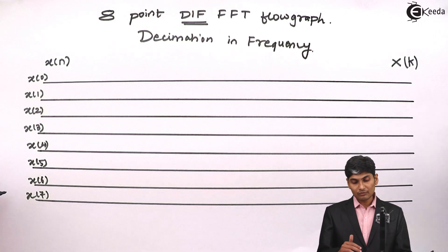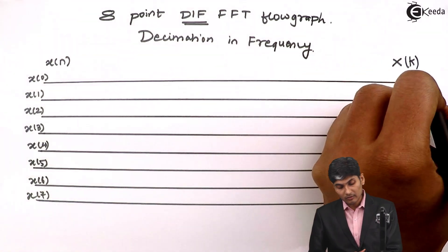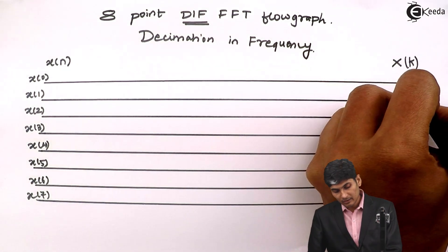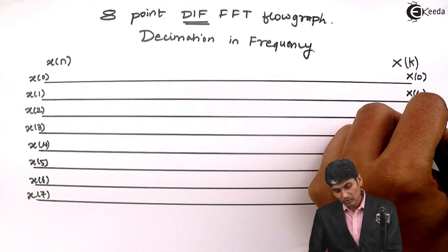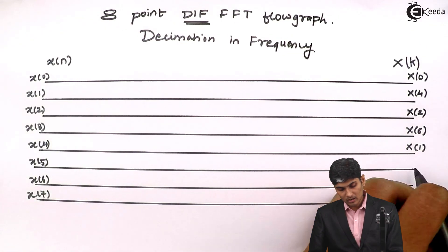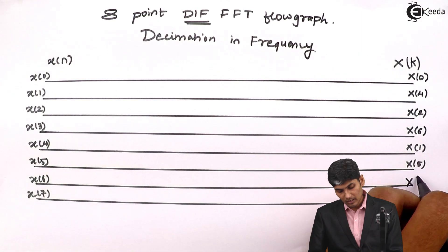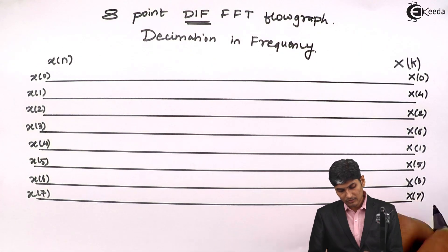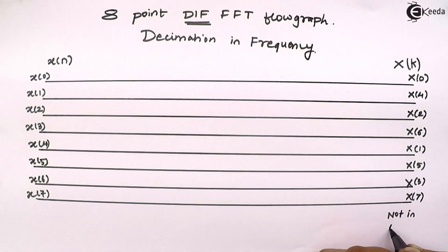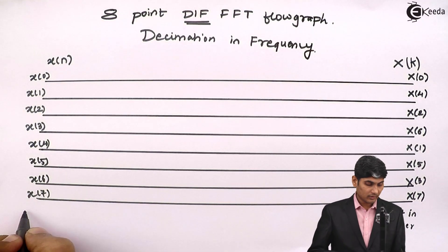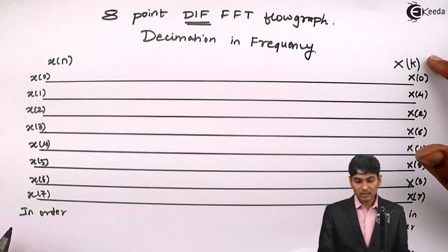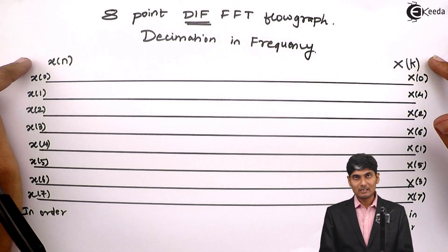Whereas the frequency domain sequences will be out of order. That means it will be X of 0, then X of 4, then X of 2, then X of 6, then X of 1, X of 5, X of 3, and lastly X of 7. So X of k is not in order, whereas X of n is in order.